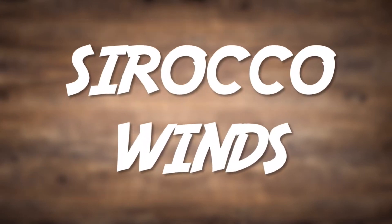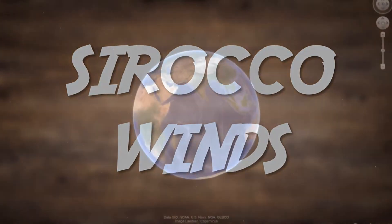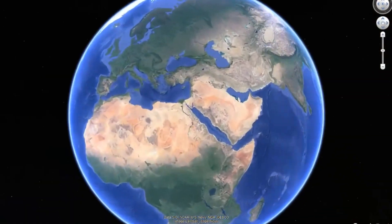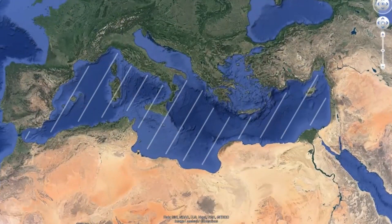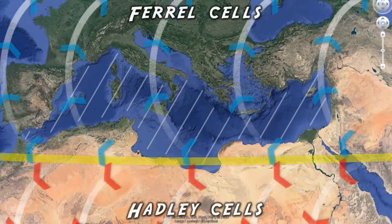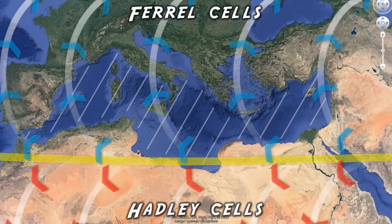Next we have Sirocco winds. Sirocco winds occur mainly over the Mediterranean Sea, where the Ferrel and Hadley cells meet.